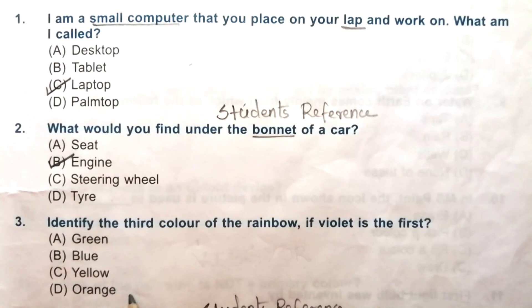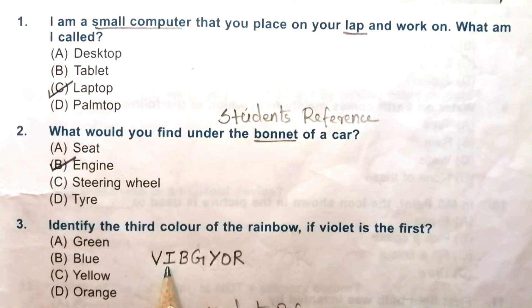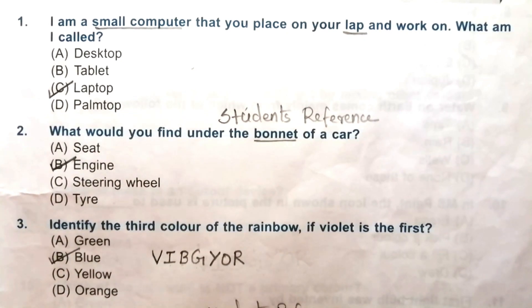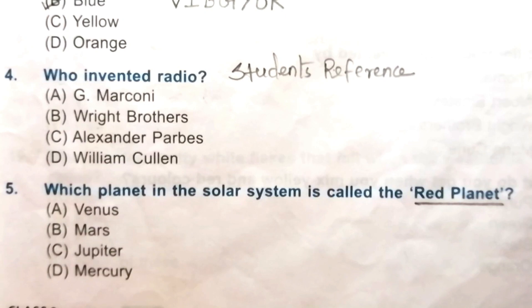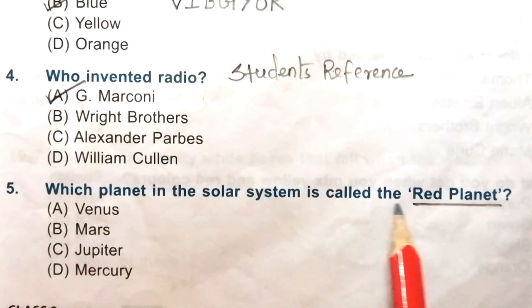Question 3: Identify the third color of the rainbow if violet is the first. Green, blue, yellow, or orange. The code word for the seven colors of the rainbow is VIBGYOR — violet, indigo, blue, green, yellow, orange, red. So if violet is first, blue is third. The answer is B, blue. Question 4: Who invented the radio? The answer is A, G. Marconi.